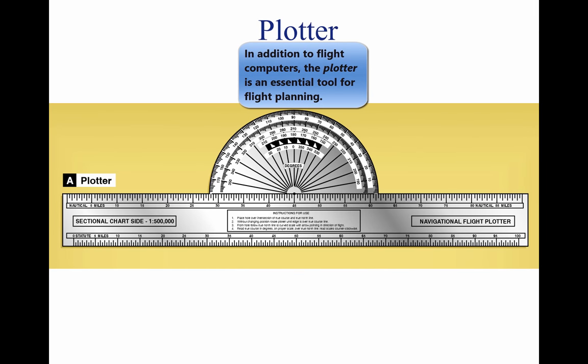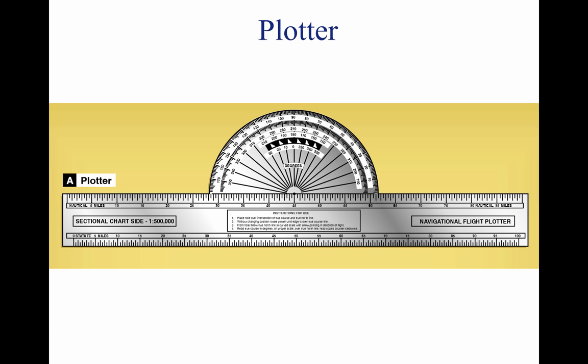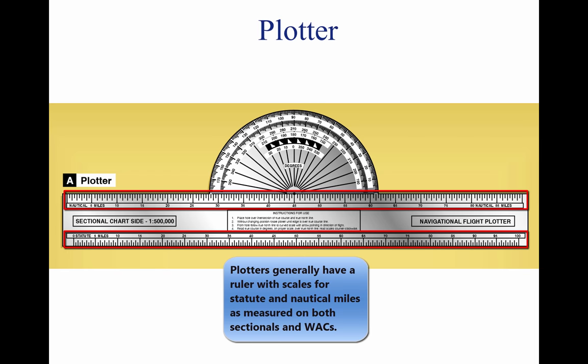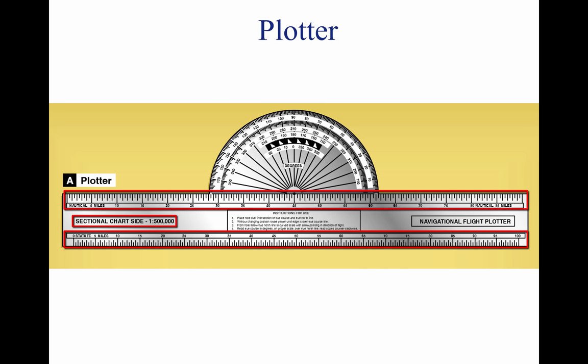Another aid in flight planning is a plotter, which is a protractor and ruler. The pilot can use this when determining true course and measuring distance. Most plotters have a ruler which measures in both nautical miles and statute miles, and has a scale for a sectional chart on one side and a world aeronautical chart on the other.